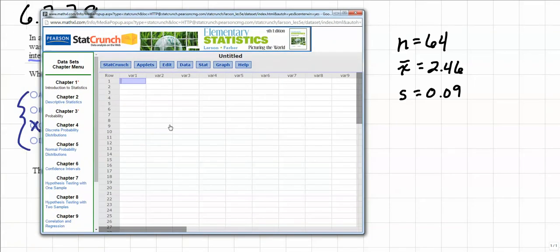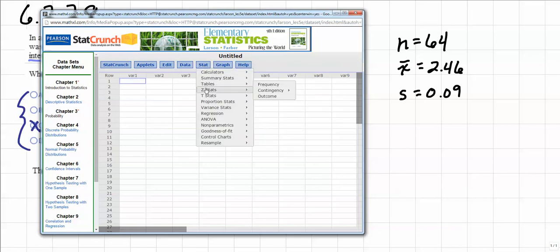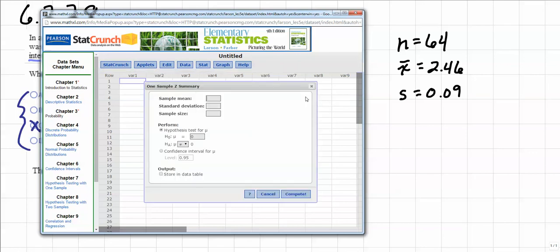So once you've got StatCrunch up and running, you will left click on Stat. And then we are going to scroll down to Z-Stats because we are going to use a standard normal distribution. We're going to scroll over and highlight one sample. We do not have data, but we do have a summary, so we will left click with Summary.